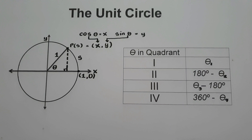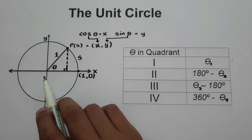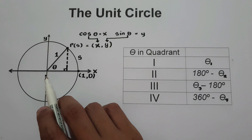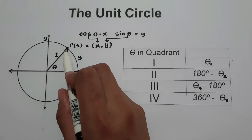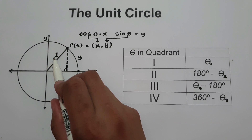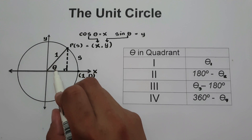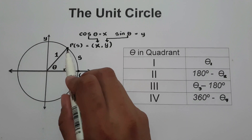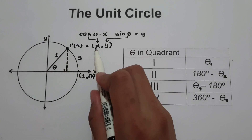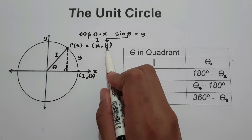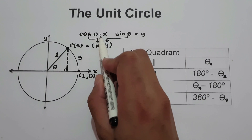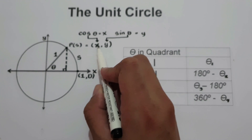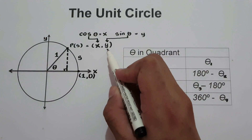The unit circle is a circle with a radius of 1. In the given figure, if we have a circle in the Cartesian coordinate plane, and if we have a right triangle, the hypotenuse of the right triangle will be equal to 1. And if we have a given angle theta, the points or coordinates occur with x and y coordinates. Always remember that cosine theta is equal to the x coordinate, and sine theta is equal to the y coordinate.